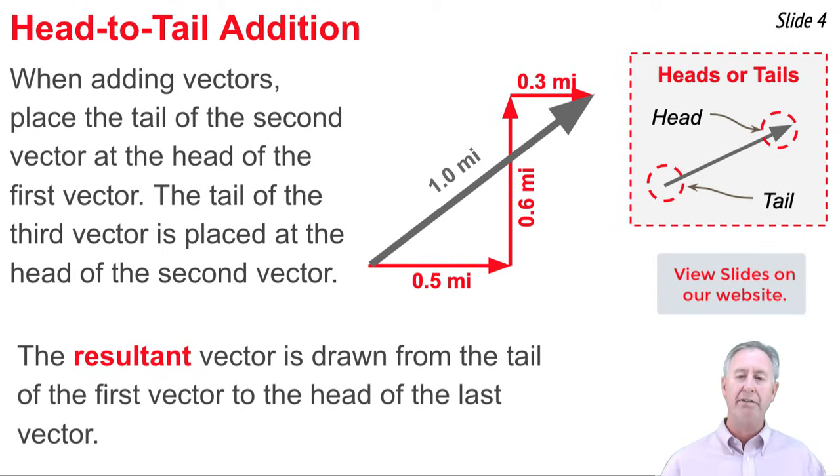The net result of all this is you have a sum, a vector sum, or resultant. And that resultant vector is drawn from the starting point to the finish point, from the tail of the first vector to the head of the last vector.